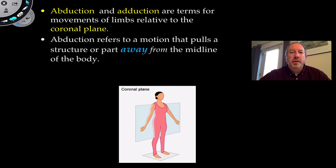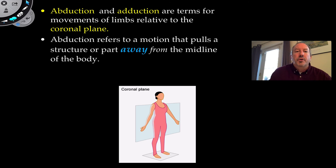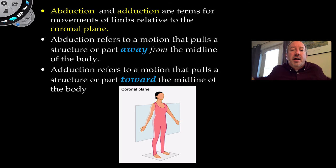When considering the coronal plane, two important words come up: abduct and adduct. These describe the movement of limbs relative to the coronal plane. To abduct is to pull a structure away from the midline — like lifting your arms up, that's abduction. To adduct is a motion that pulls a structure toward the midline of the body along the coronal plane.